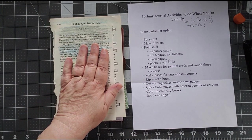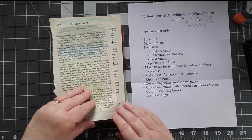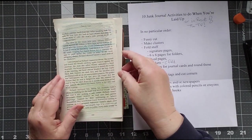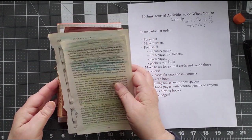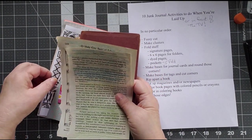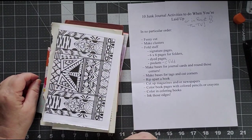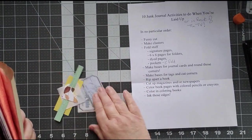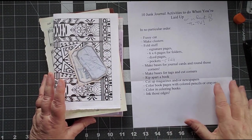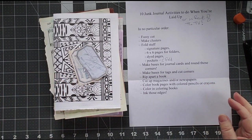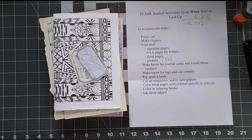Color. Color the pages. Color them in. Do something with them. And then, of course, where did my page go? You can color in the book pages. And you can fussy cut or you can ink those edges. So I'm going to bring those back up and ink those edges. So if you have other ideas of what you can do when you're laid up, please make sure you put that in the comments below.